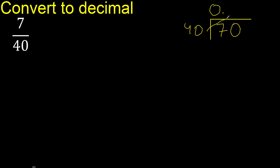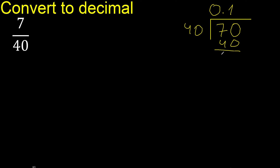40 multiplied by 2 is 80, which is greater than 70, so we try 1. 40 multiplied by 1 is 40. We subtract: 70 minus 40 is 30. There is no number that goes further down.